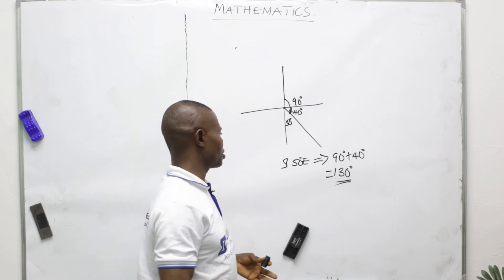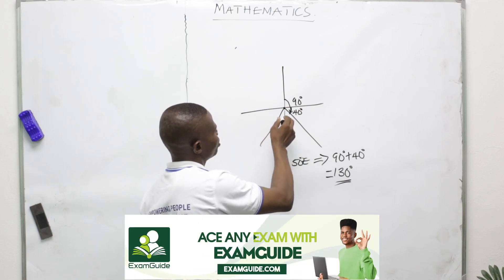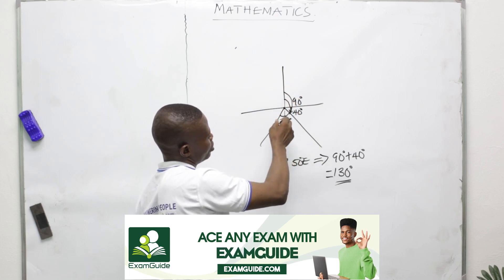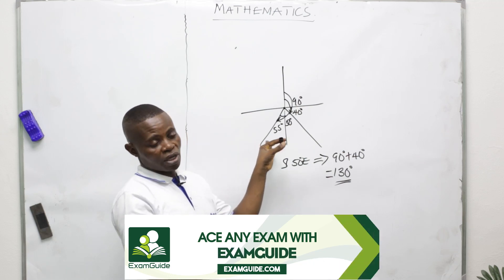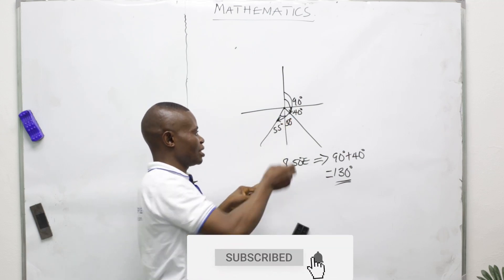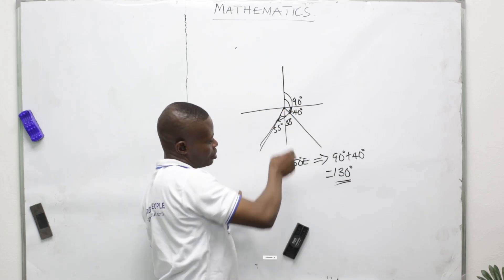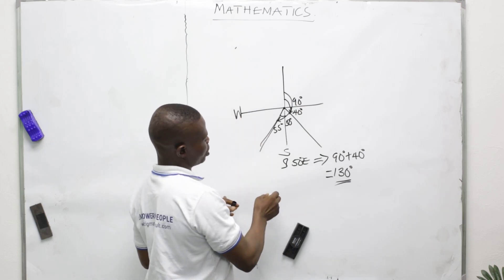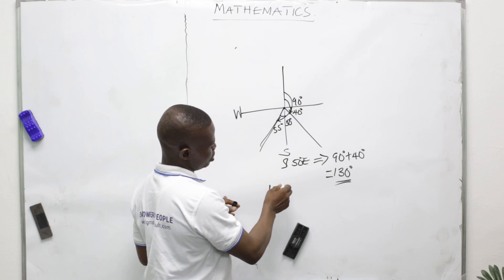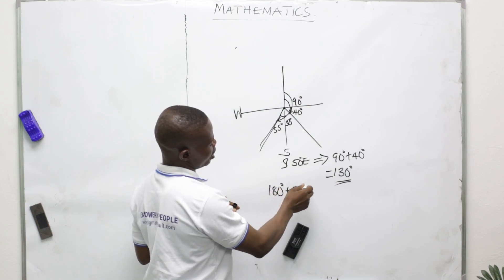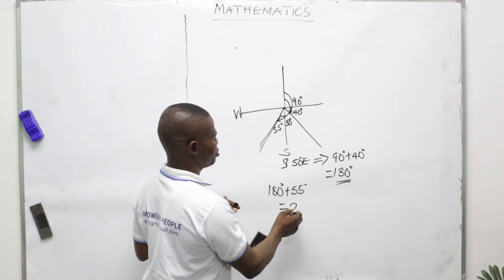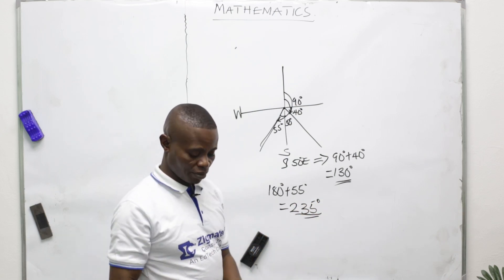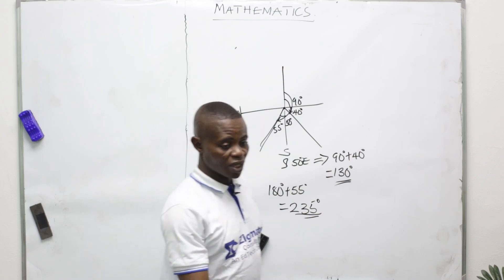Then 55 degrees southwest. The movement here — nothing to subtract because the line strikes directly in the southwest direction. So the solution is 180 degrees plus 55 degrees, meaning 235 degrees is our solution for the southwest bearing.